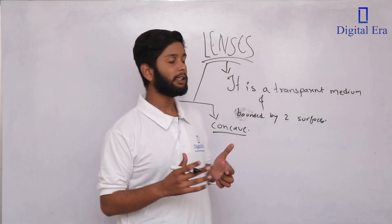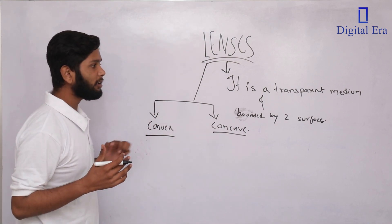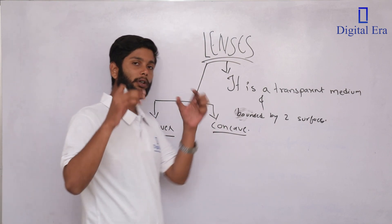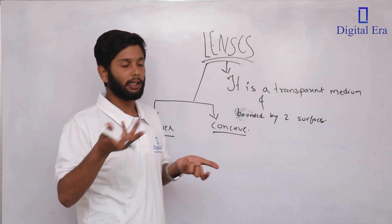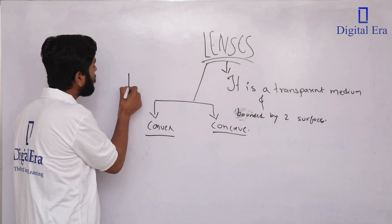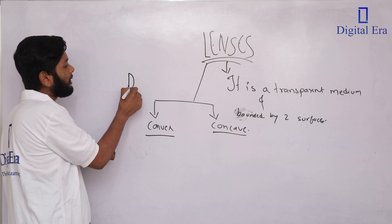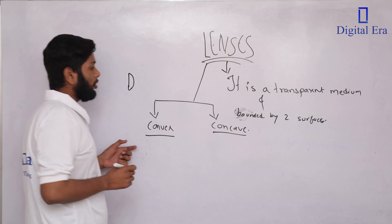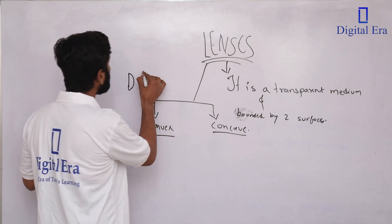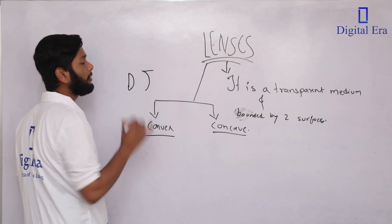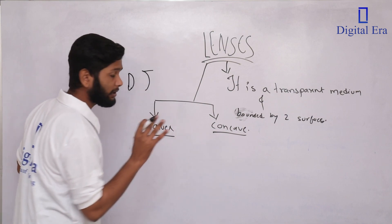Let's take a convex lens. If you have seen an old man's reading glass, it is slightly raised upward — that is a convex lens. A concave lens is slightly curved inward. This is called concave and convex.